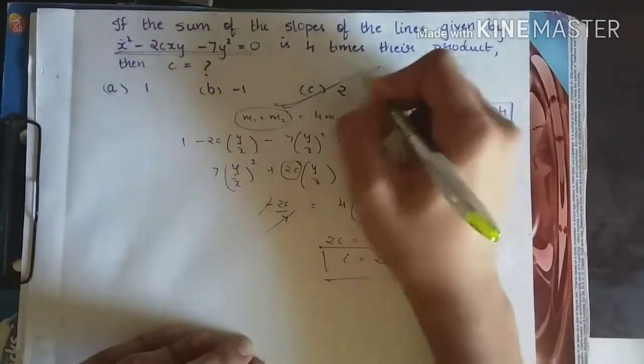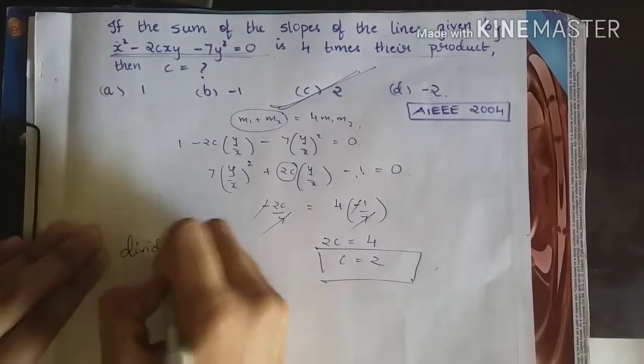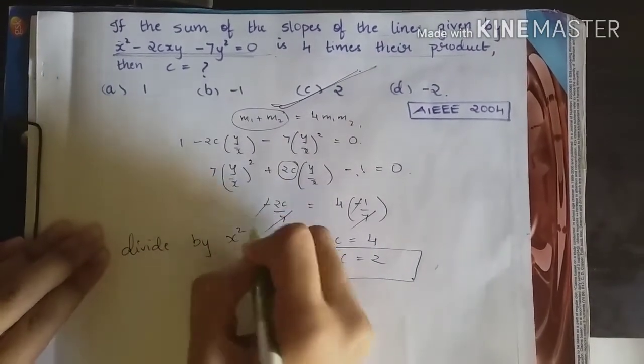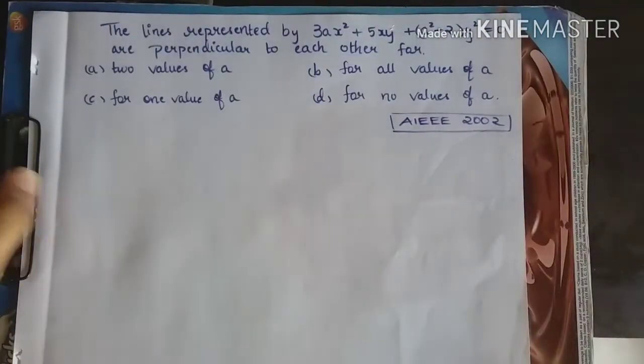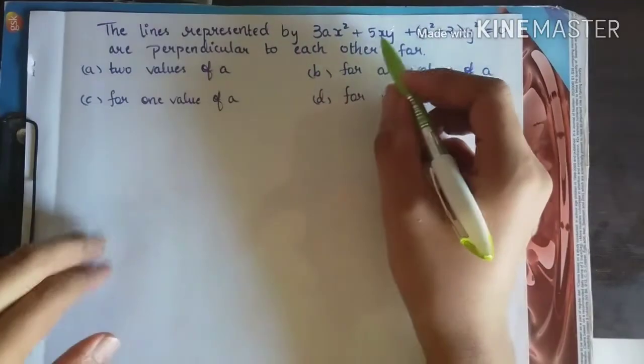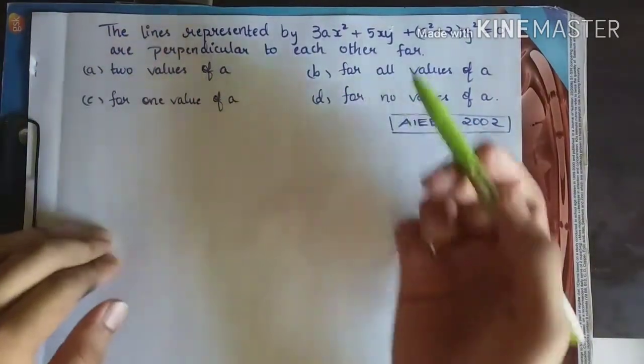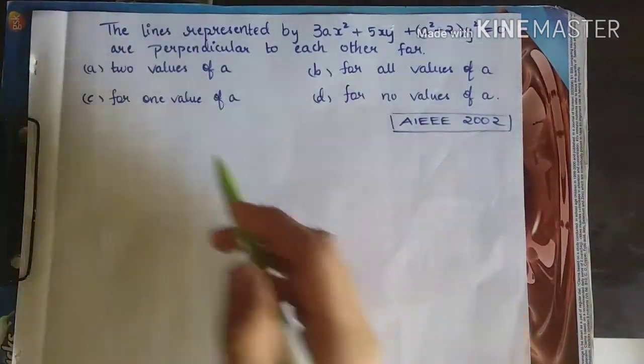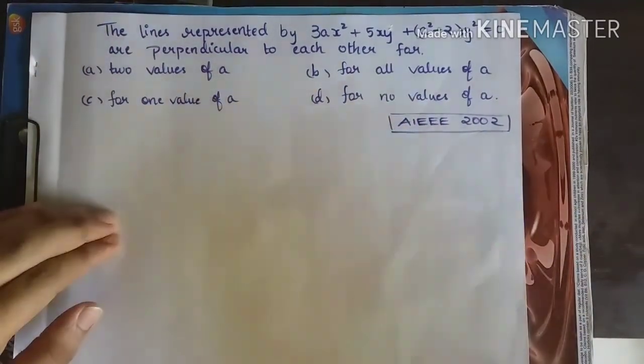This was really too simple. Just that mantra. That is divide by x square. This is the first thing you are supposed to do. So let's see the next question. It says the two lines represented by 3ax square plus 5xy plus a square minus 2 into y square equal to 0 are perpendicular. Then what can be the values of a? That is what they are asking. So the same thing here.